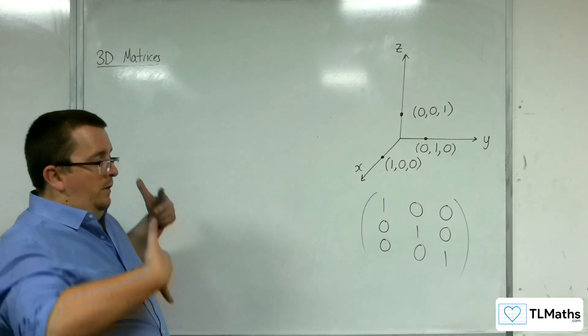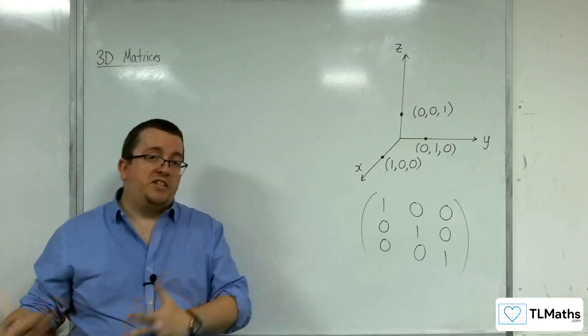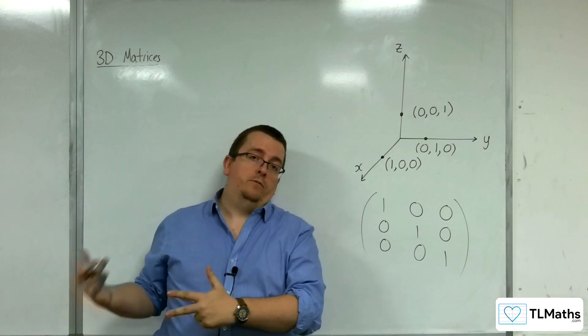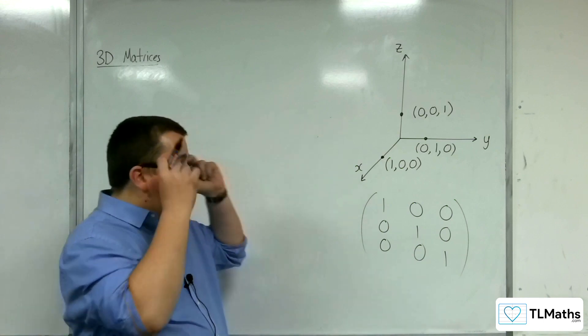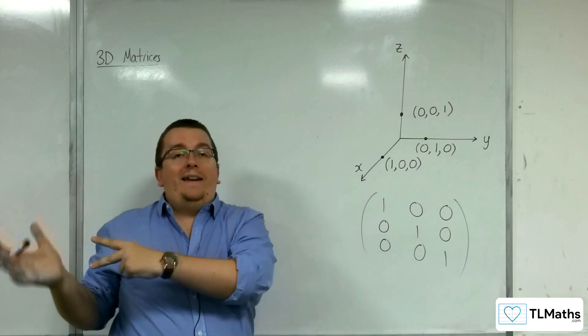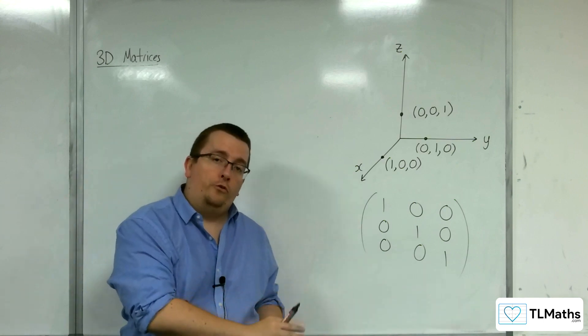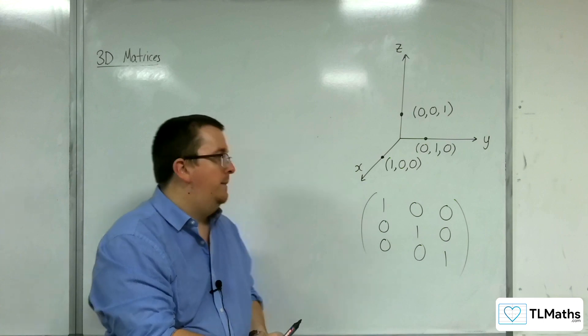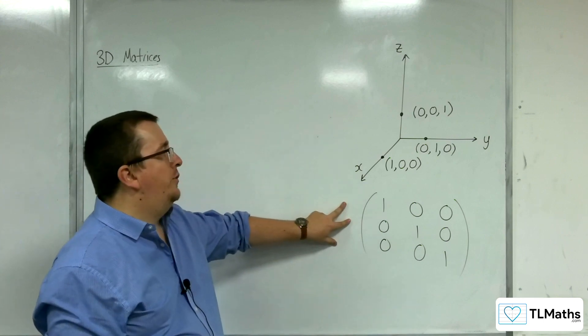The identity matrix, as we understand it for 2D transformations, is that when I apply the identity matrix, it keeps all the points fixed. Exactly the same for three dimensions as well. This is our identity matrix in 3D.